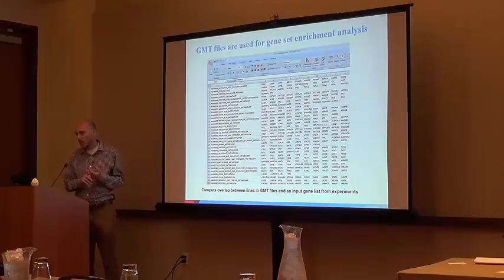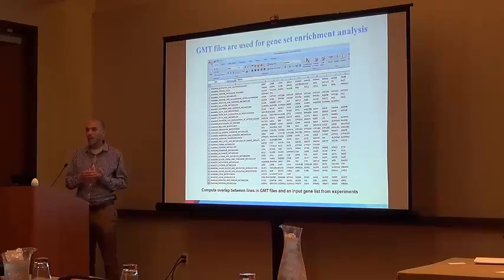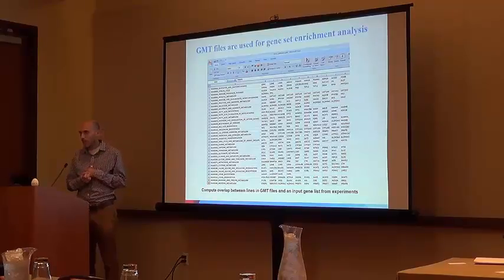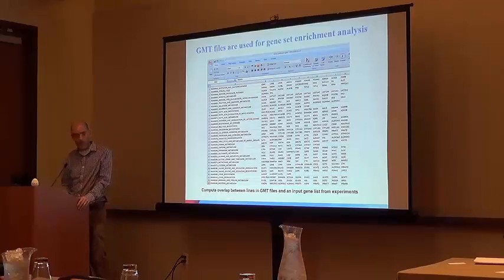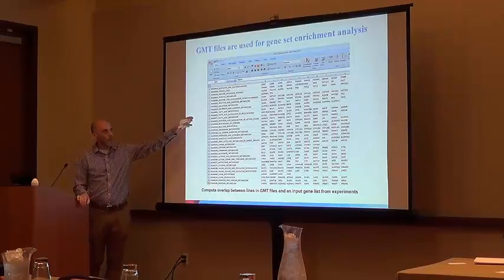Some of the exciting resources are, for example, the ENCODE project, the Epigenomics Roadmap data, the Allen Brain Atlas data, and the mouse phenotype data collected by the KOMP project. This is an example of a gene set library — it's just a text file, open in Excel. You have some term, and then you have a bunch of genes that belong to that term.